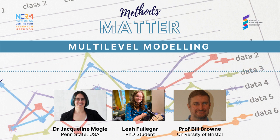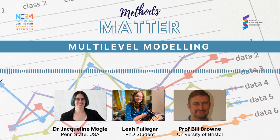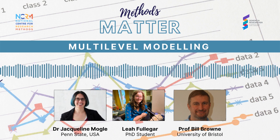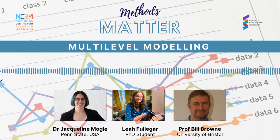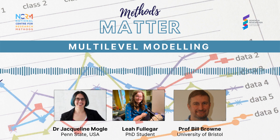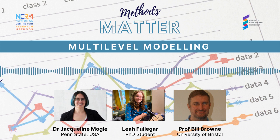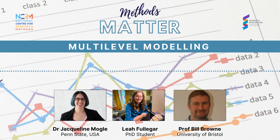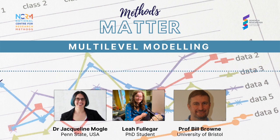These models can capture how people start differently in terms of cognition, and whether their cognition is declining slowly or quickly across time. Other techniques used in the past, like repeated measures analysis of variance, constrain everyone to change the same way over time. The multilevel model gives you flexibility to look at these other types of trajectories in the data.